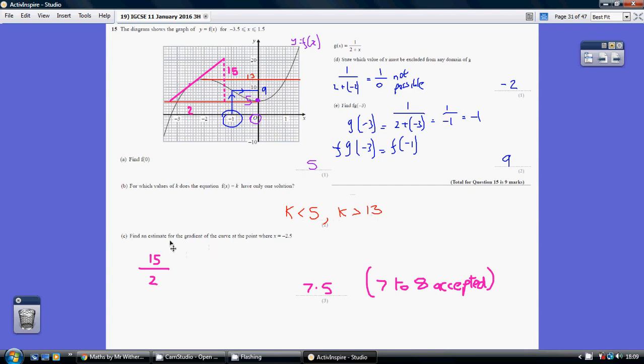For part c, find an estimate for the gradient of the curve at the point where x equals minus 2.5. So just draw in a tangent to the curve at minus 2.5 and create a triangle and work out your y step and your x step. I've got 15 over 2, giving me 7.5. There was leeway in the answer here; anything between 7 and 8 would do.